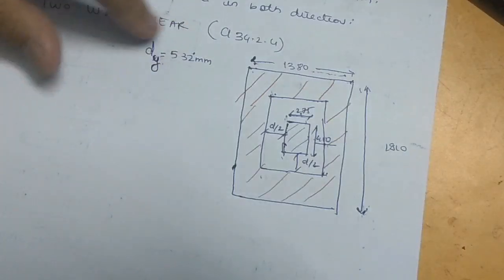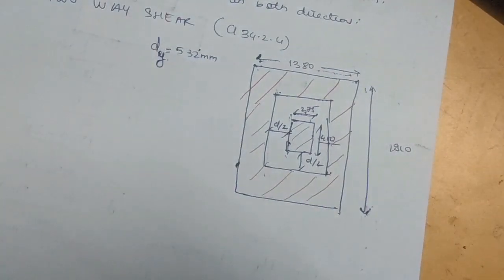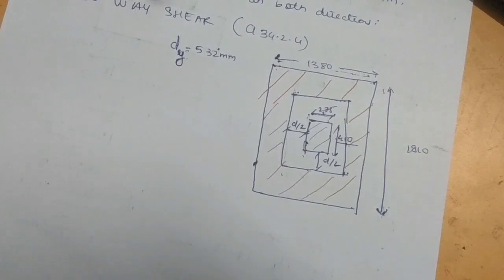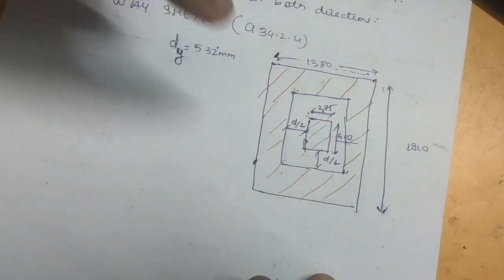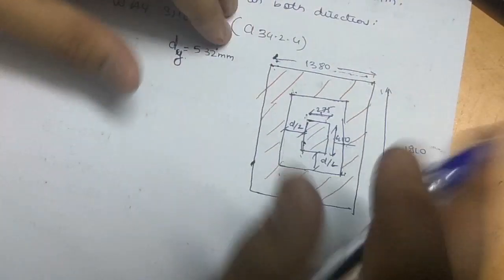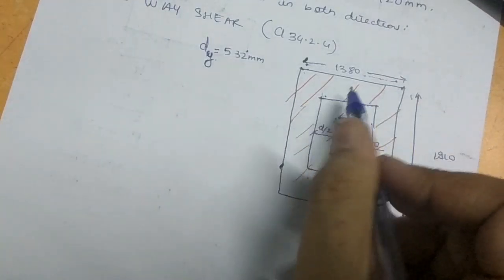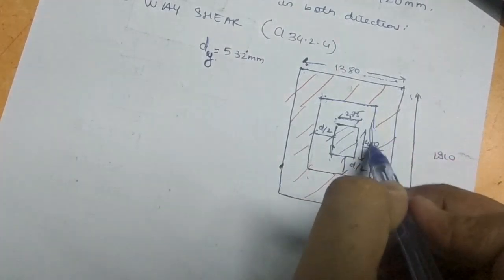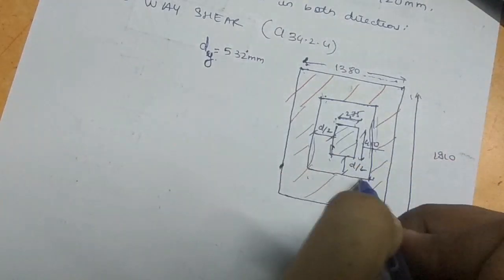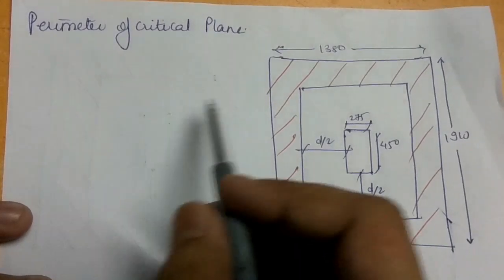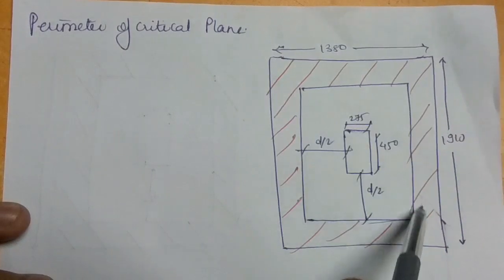D is 532 mm. We have to calculate the shear resistance of concrete and the shear force causing two-way failure. For that we need the area of the shaded portion and the area of the critical plane. First we calculate the perimeter of the critical section.